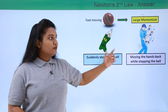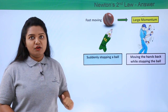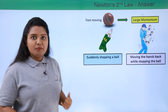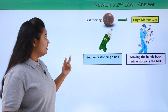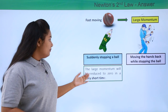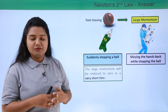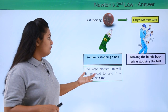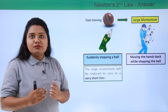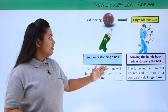Now let's analyze two situations: suddenly stopping a ball, and moving the hands backwards while stopping a ball — based on momentum and Newton's second law. When a player suddenly stops a fast moving ball with large momentum, that large momentum is reduced to zero in a very short period of time — for example, in a fraction of a second.